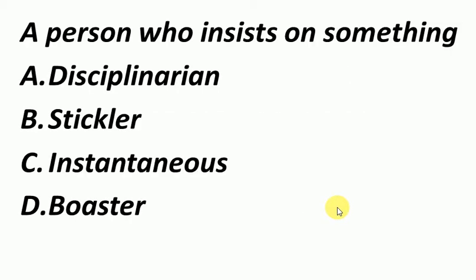A person who insists on something — मतलब ऐसा व्यक्ति जो एक ही चीज से चिपका रहे. ऐसे व्यक्ति को हम कहते हैं Stickler. The correct answer is B, Stickler. Disciplinarian का मतलब है अनुशासित व्यक्ति. चौथा है Boaster — Boaster मतलब डिंगे मारना, जो व्यक्ति बहुत डिंगे मारता है.